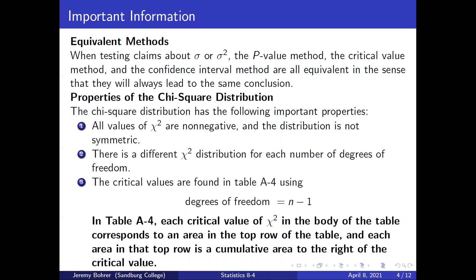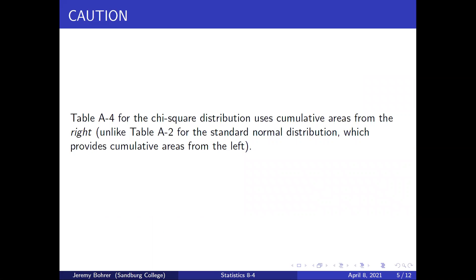Here are some properties of the chi-square distribution. All values of chi-square are non-negative and the distribution is not symmetric. There is a different chi-square distribution for each number of degrees of freedom. The critical values are found in table A4 using degrees of freedom equal to n minus 1. Each critical value of chi-square in the body of the table corresponds to an area in the top row of the table, and each area in that top row is a cumulative area to the right of the critical value. Table A4 for the chi-square distribution uses cumulative areas from the right, unlike table A2 for the standard normal distribution, which provides cumulative areas from the left.